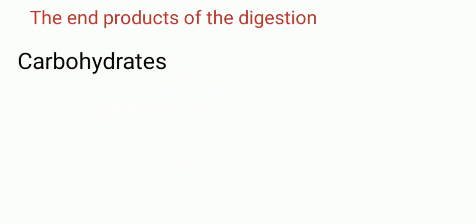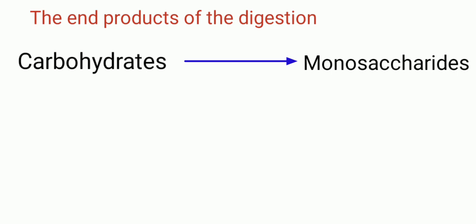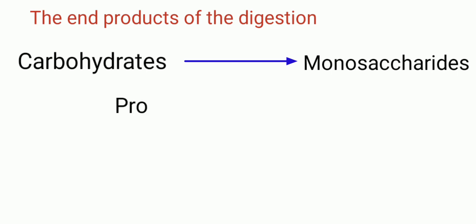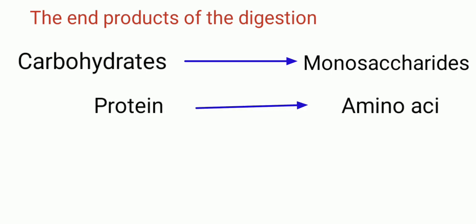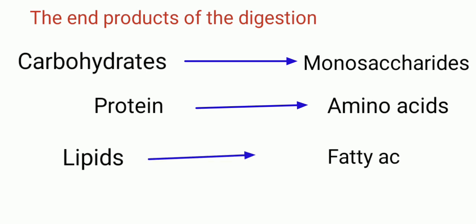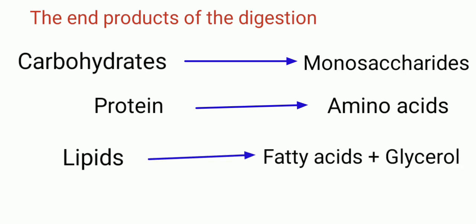The end products of digestion are monosaccharides from carbohydrates, amino acids from proteins, and fatty acids and glycerol from lipids.